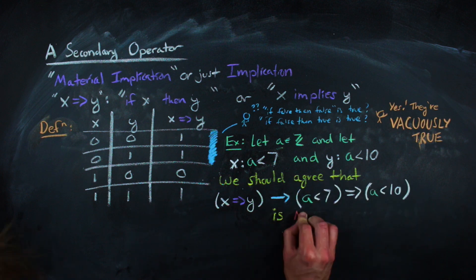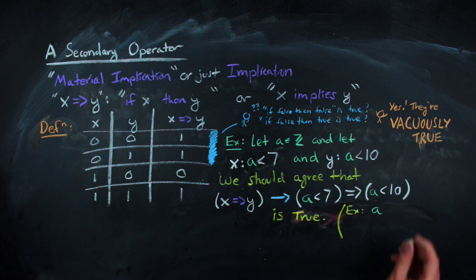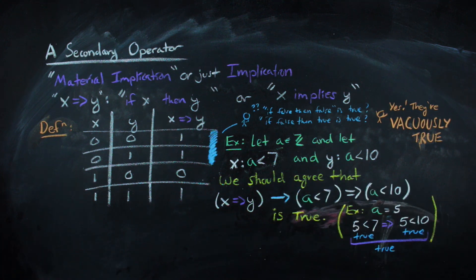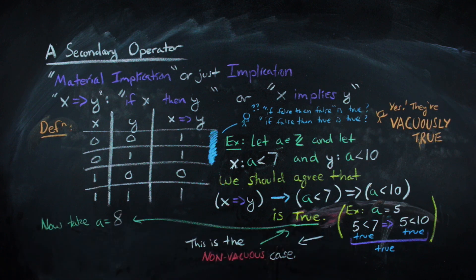Because if a is less than 7, 7 is less than 10, then a is less than 10. However, when we go ahead and choose a value for a, like 8, we get something that's a little bit off.